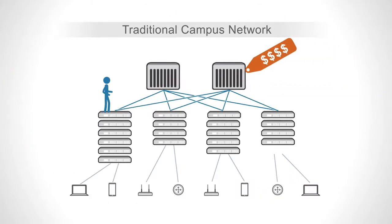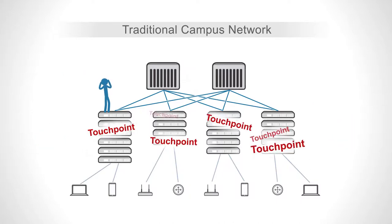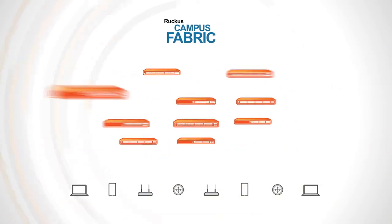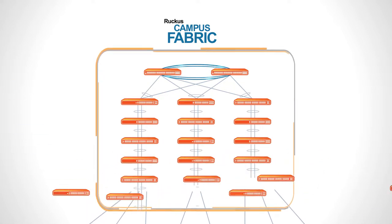Traditional networks are expensive to purchase. They are complex, inflexible, and costly to deploy and maintain. There are too many touch points. Ruckus Campus Fabric gives you a single IP point of management for all switches.